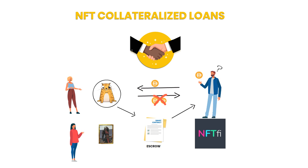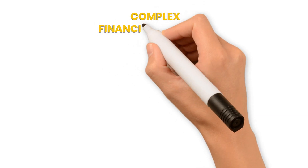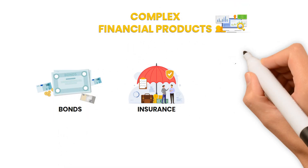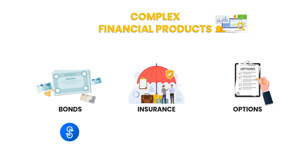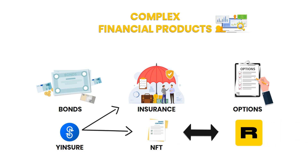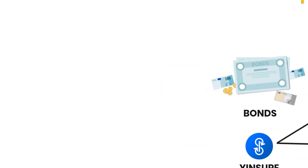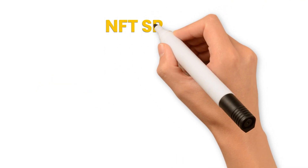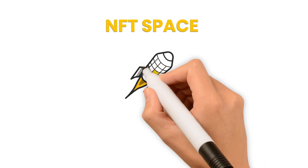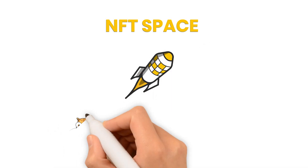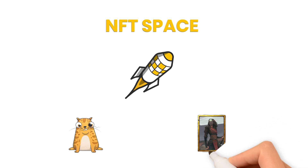Besides being used as collateral, NFTs can also represent more complex financial products such as insurance, bonds, and options. Yinsure from Yearn Finance is a good example of NFT usage in the insurance space. In Yinsure, each insurance contract is represented as an NFT that can also be traded on a secondary market such as Rarible. The NFT space is one of the fastest growing niches in crypto and has huge potential, ranging from digital kittens to complex financial products.